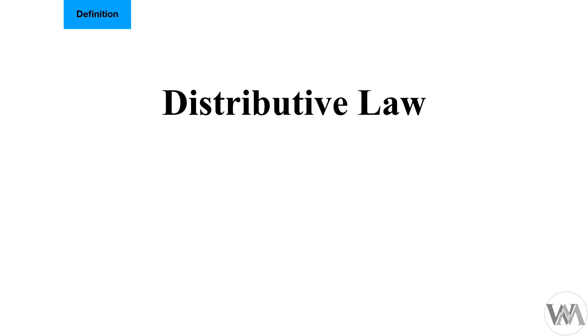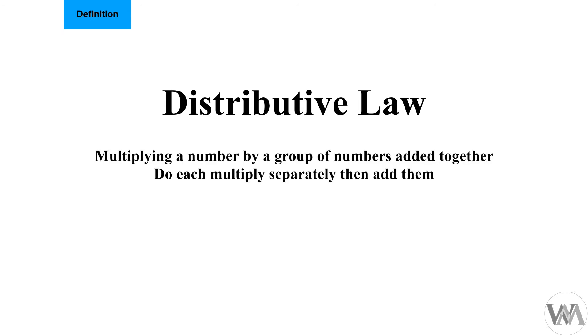Our third and final law is the distributive law — a very unique and very important one, so pay close attention and practice it as much as possible. The distributive law involves multiplying a number by a group of numbers added together (or subtracted from each other). We can also say it is numbers grouped together that are multiplied by the same number, where we do each multiplication separately and then add all the results together.